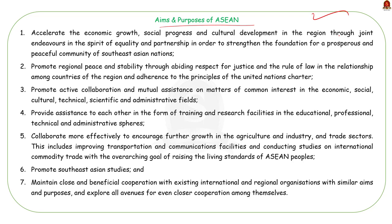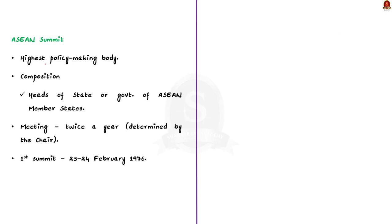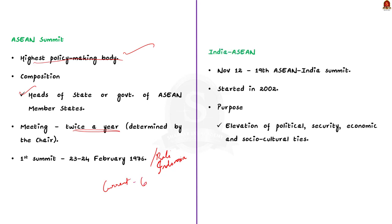The ASEAN summit is the highest policy-making body in ASEAN, comprising heads of state or government of member states. Meetings are held twice annually at a time determined by the chair of the ASEAN summit. The first ASEAN summit was held in Bali, Indonesia. The current chair of ASEAN for 2022 is Cambodia. The 19th ASEAN-India summit was held on November 12th. ASEAN and India have been holding annual summits from 2002 to elevate political, security, economic, and socio-cultural ties.